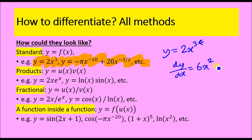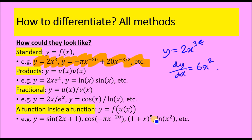The cases I'm really interested in today are functions that take the form of multiple products — for example, two functions multiplied together like 2x and eˣ. Or you could have fractional forms like a function over another function, such as 2x over eˣ. The third type is a function inside a function, like 2x plus 1 inside a sine, or (1 + x) to the power 5.